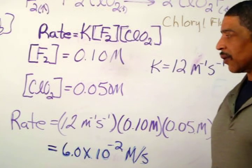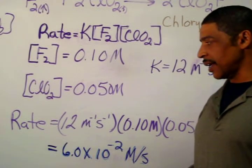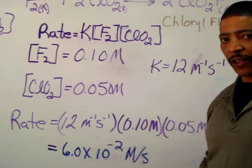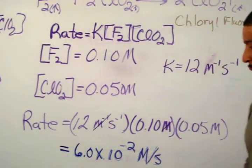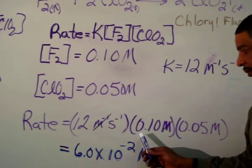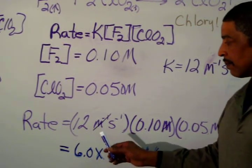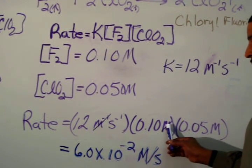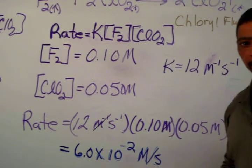Now that the proper rate law has been written and the value of k has been determined, it is possible to calculate the rate of this reaction at any concentration of reactants. For example, suppose the concentration of fluorine gas was 0.1 molar and the concentration of chlorine dioxide was 0.05 molar. The rate may now be calculated by multiplying 12 M⁻¹s⁻¹ times 0.10 molar times 0.05 molar. The final answer is 6.0×10⁻² molar per second.